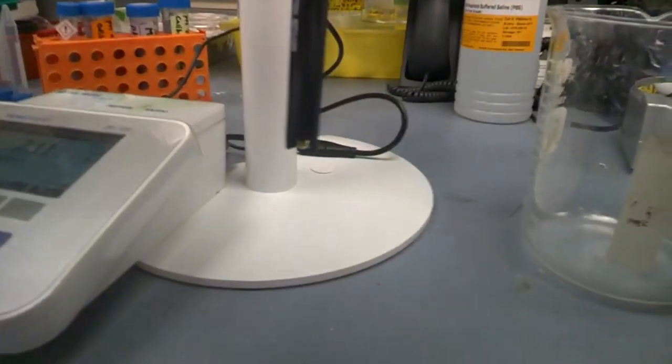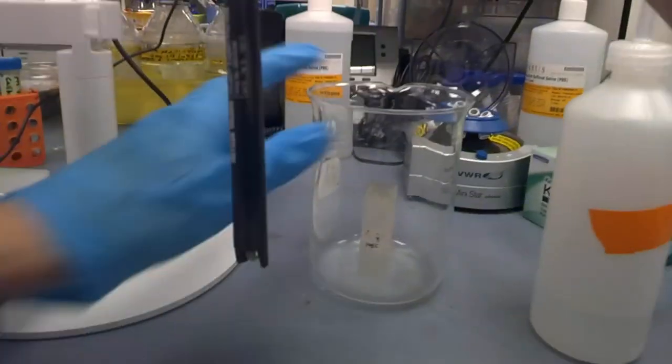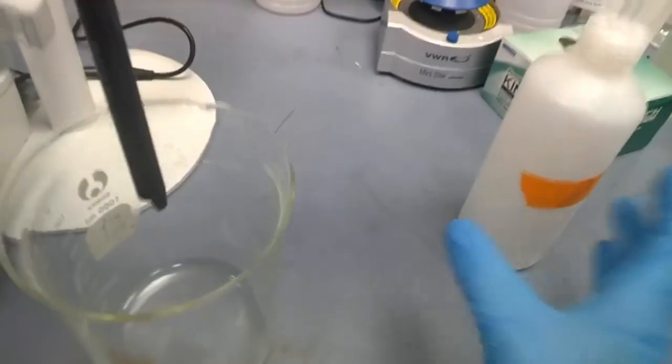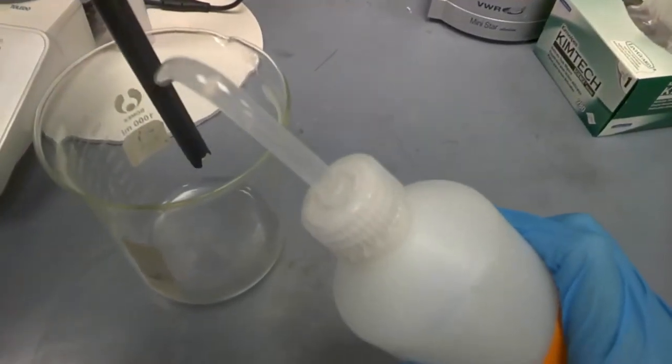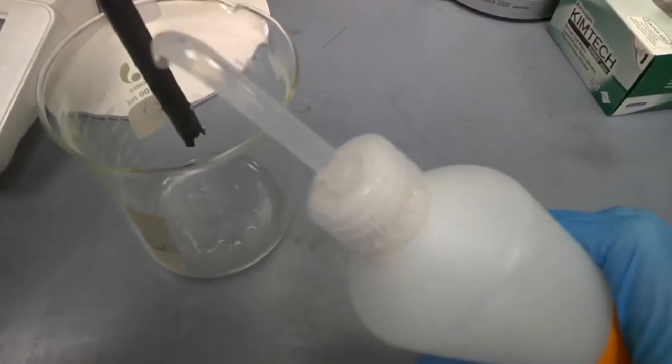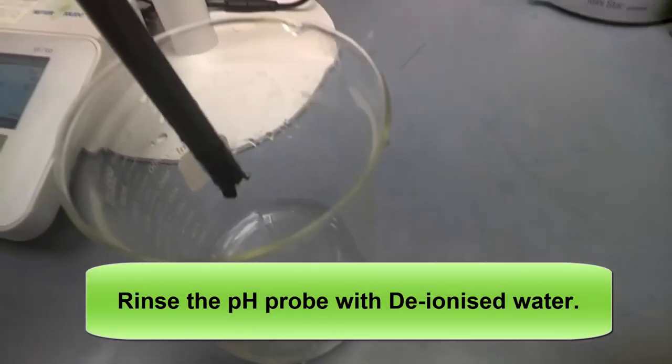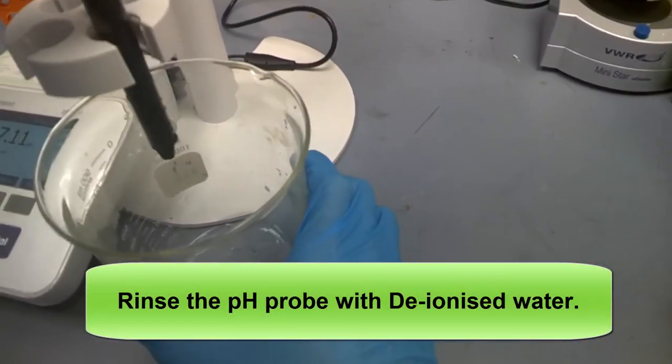Place on one side this part here, the pH probe. We wash it first with DI water. Spray some DI water at the probe here. Then put it back at the casing.